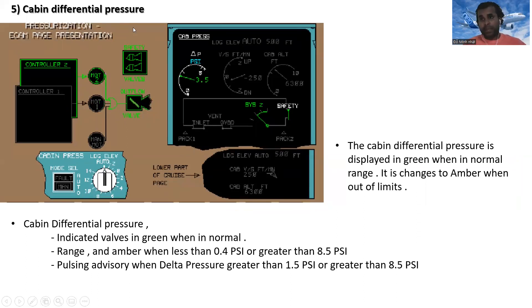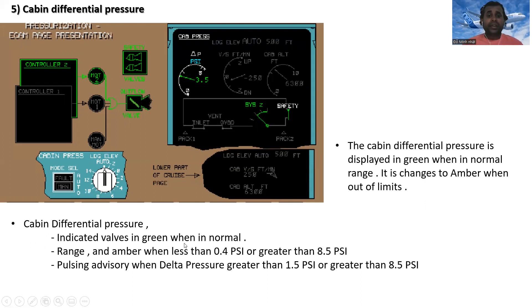Next is cabin differential pressure, shown as delta pressure in PSI. It is displayed in green when in normal range and changes to amber when out of limits — that is, less than 0.4 PSI or greater than 8.5 PSI. A pulsing advisory appears when delta pressure is greater than 1.5 PSI or greater than 8.5 PSI.